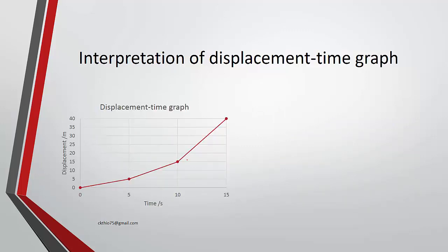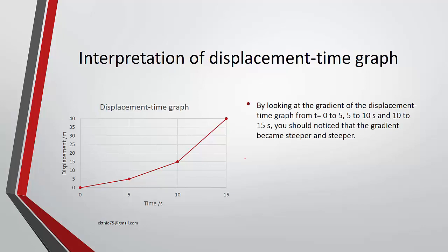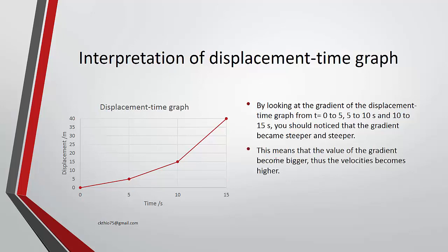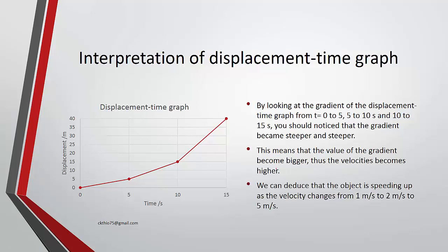In another case, you can apply the same approach. By looking at the gradient of the displacement graph over three intervals, you should notice the gradient is becoming steeper and steeper, meaning the velocity is becoming higher. We can deduce the object is speeding up. With calculation, we can confirm that the velocity increases from 1 meter per second to 2 meters per second to 5 meters per second.